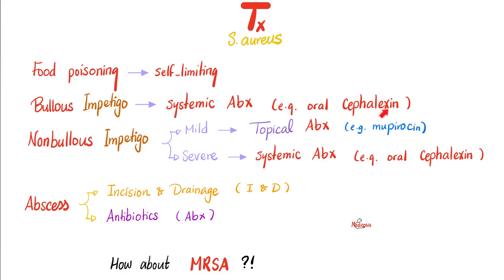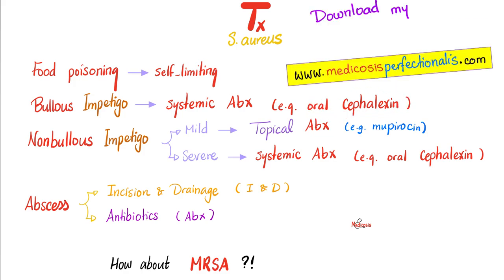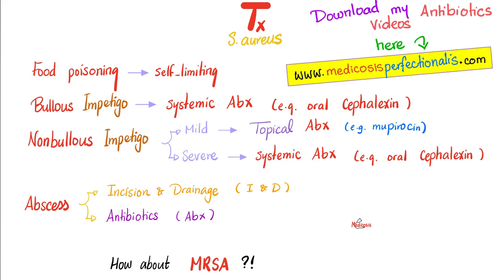An example of a systemic antibiotic for bullous impetigo is oral cephalexin, a first-generation cephalosporin. Non-bullous impetigo is usually less severe and can be caused by Staph or Strep. If mild, treat topically with topical mupirocin antibiotic ointment. If severe, treat systemically with oral cephalexin — a first-generation cephalosporin, which is a cell wall synthesis inhibitor that inhibits the synthesis of the peptidoglycan cell wall of Staph aureus.